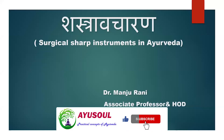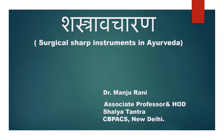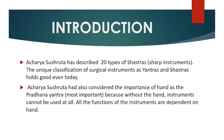Hello friends. After Yantra, we are going to understand the next variety of surgical instruments in Ayurveda, that is Shastra. Acharya Shushruta has described 101 types of Yantra and 20 types of Shastra, that is sharp instruments. This unique classification given by him for these surgical instruments holds good even today.